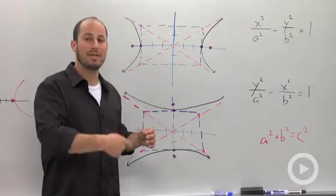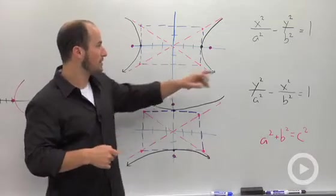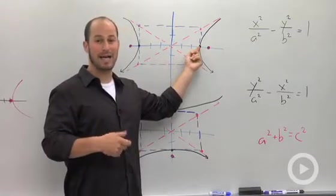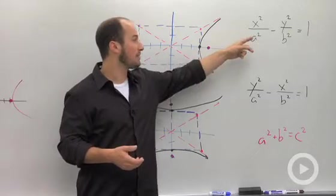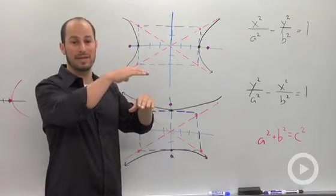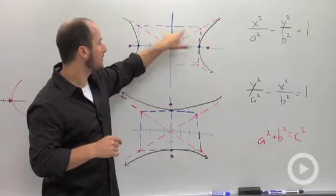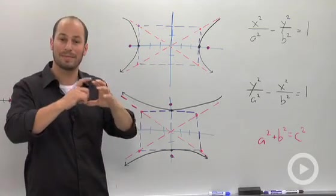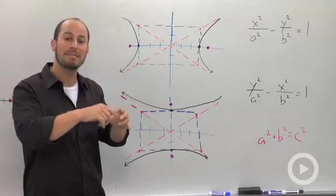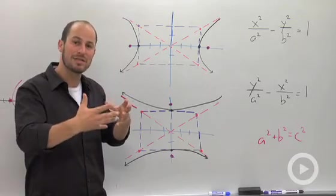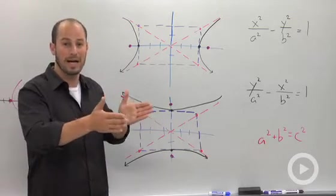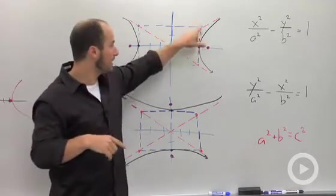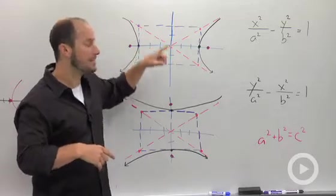We do the exact same thing for hyperbolas. You look at the term underneath the X, and that is going to go out X units. You look at the term underneath the Y, you're going to go up Y units. So you can create sort of four key points for where, if it was an ellipse, that ellipse would go through. Except instead of connecting them as a circle, what you really want to do is create a box. So where those two points would meet in each quadrant, draw the point, and then draw this little dotted box.